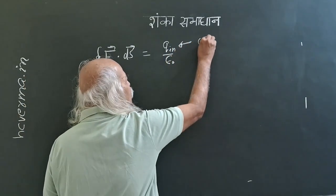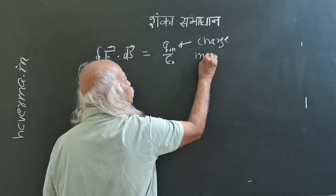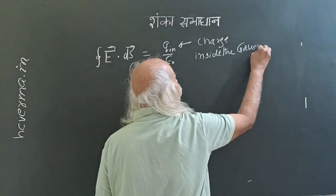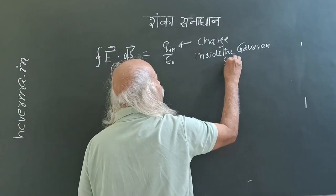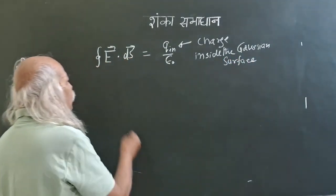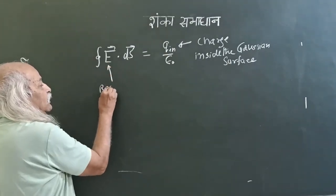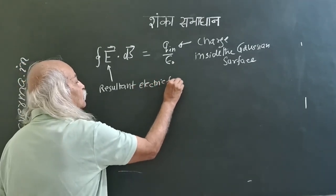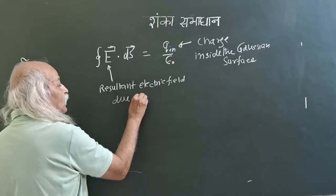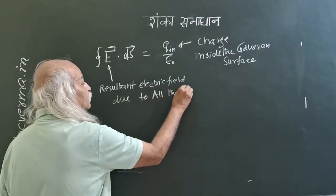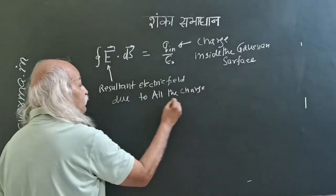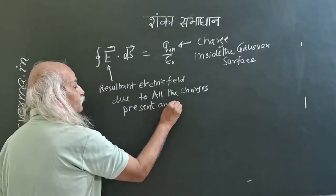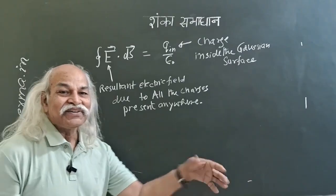This q inside is the charge inside the Gaussian surface, which is a closed surface, remember. And this E is the resultant electric field — the resultant electric field due to all the charges present anywhere, inside or outside.